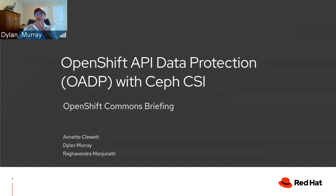We also have Raghu Vendra, who comes from the OpenShift storage side and has been doing a lot of work helping us make sure that the OADP project aligns nicely with the CSI initiative and all the other work coming from OCS.